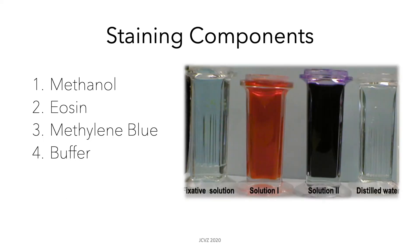Here we have the components of our Romanovsky stain. First, we have methanol, which is a fixative and helps cells adhere to slides. Then we have eosin, which is an acidic stain, and its purpose is to color cytoplasmic components. After, we have methylene blue, which is basic and is able to stain the nucleus and other acidic cellular material. Finally, we have the buffer, which is used to increase the staining ability of our different stains.